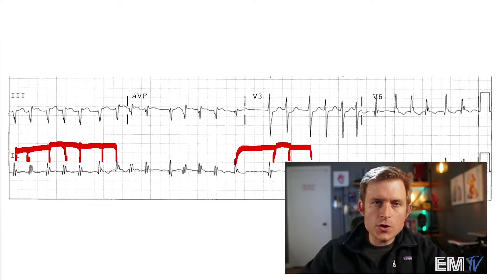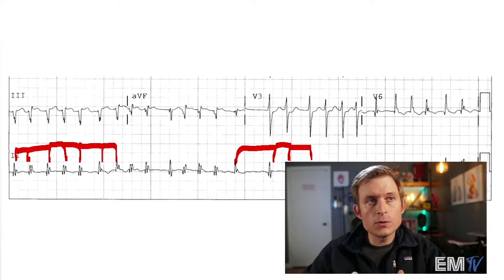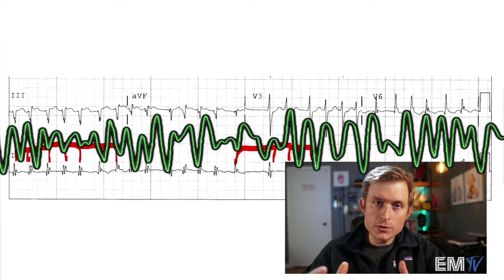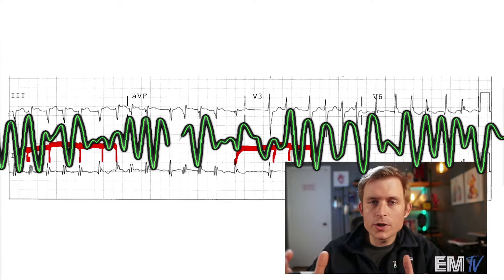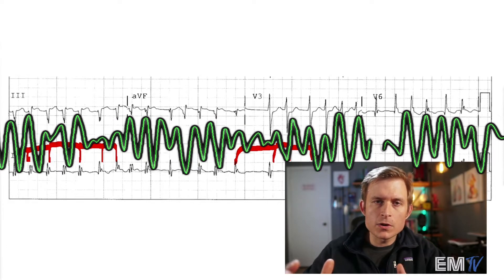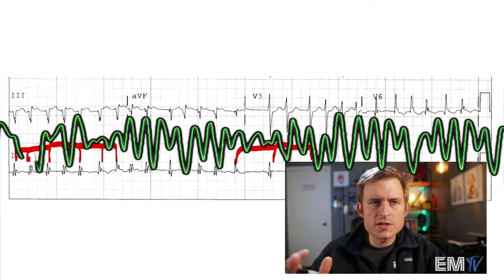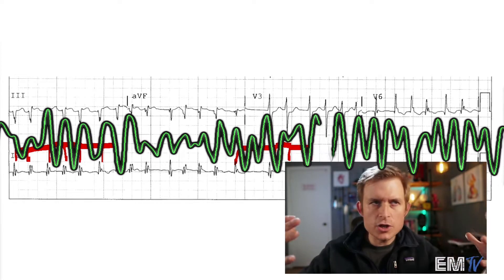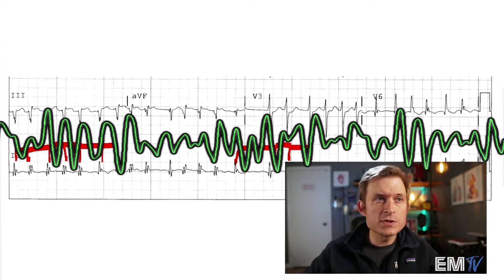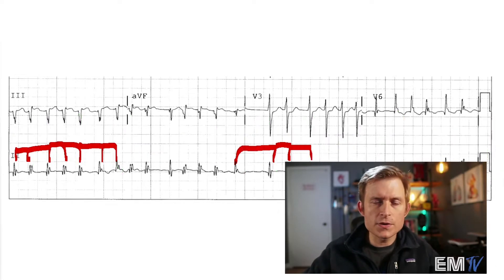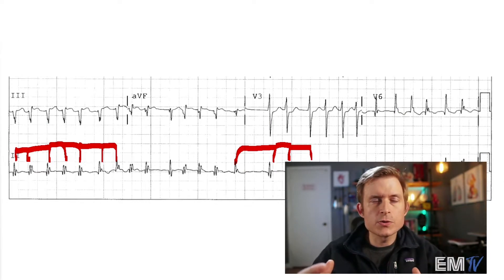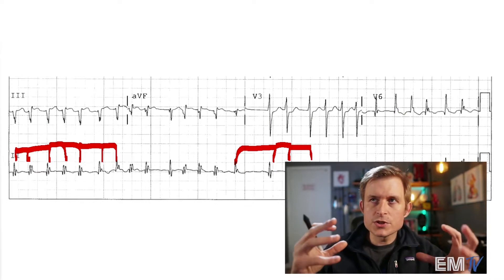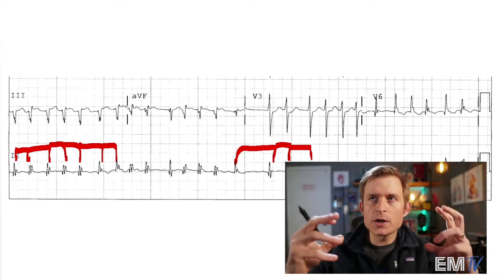There's only one condition that creates an irregularly irregular pattern, and that condition is fibrillation. Now there are only two places in the heart that fibrillation can occur. The ventricle produces our lethal ventricular fibrillation — there's nowhere to conduct further south along the conduction system than the ventricle — so we're left with big, chunky, unorganized ventricular waves. The other place in the heart that can fibrillate is the atria, where the action is a lot like the ventricles: chaotic focuses firing all at once.